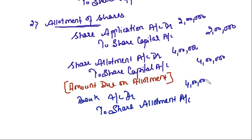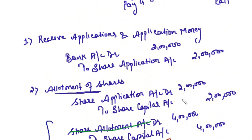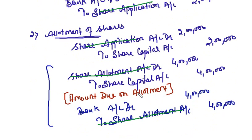Notice the net effect: here debit share allotment 4 lakh, here credit share allotment 4 lakh — the net journal entry is bank to share capital. The main aim is to raise capital — you receive money in your bank and that becomes your capital which you use in the business. So the ultimate entry is bank to share capital; that is the net effect of all the entries.